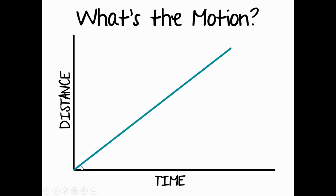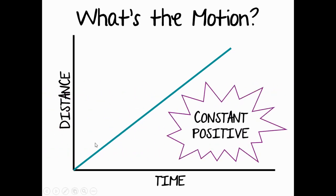We are going to be going over graphing motion. Because this line is moving up the y-axis, this type of line has a positive motion, and because it is a straight line, this is a constant positive line. The x-axis is time, the y-axis is distance on a distance-time graph. This point where it's starting is called the origin — think of it like home. Most often, this particular object is moving in a constant positive direction away from the origin.